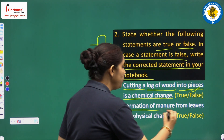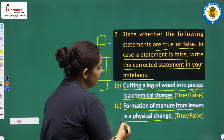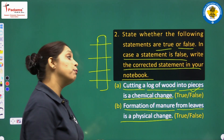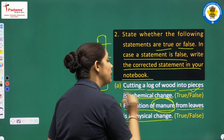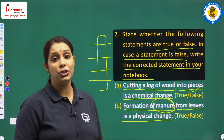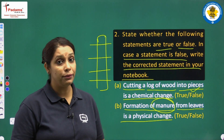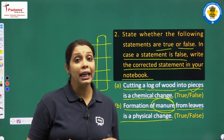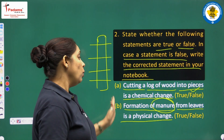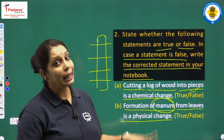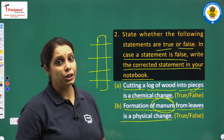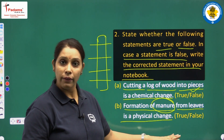Next: formation of manure from leaves is a physical change. Again, this is a false statement. Formation of manure is a chemical change because we get manure by the decomposition and decaying of leaves, and decaying of organic matter is an example of chemical change. So this statement is false.